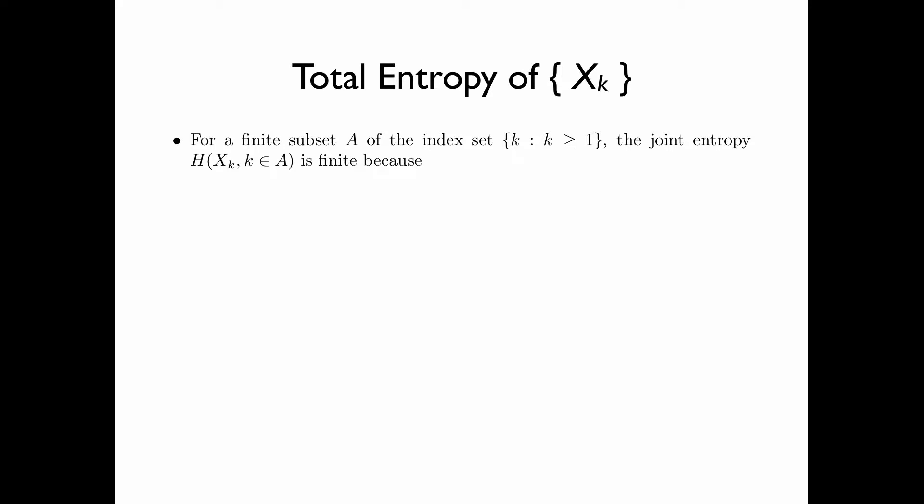For a finite subset A of the index set k such that k greater than or equal to 1, the joint entropy H of x sub k, k in A, is a finite quantity because the joint entropy is upper bounded by the summation of H of x sub k, k in A, by the independence bound for entropy. This summation is finite because each term H of x sub k is finite, and the number of terms in the summation is also finite.